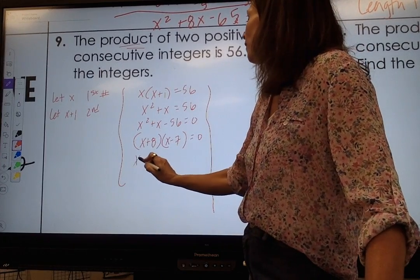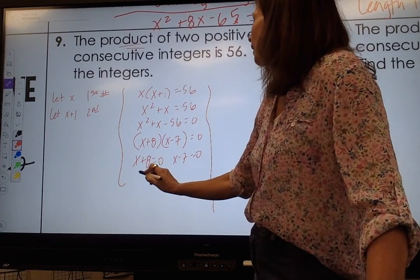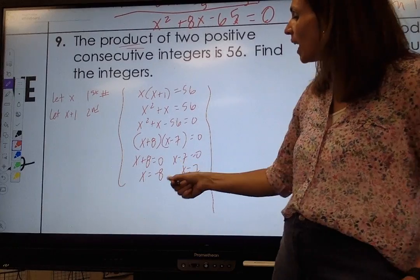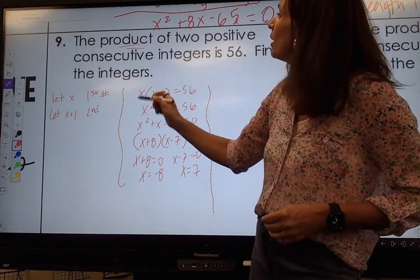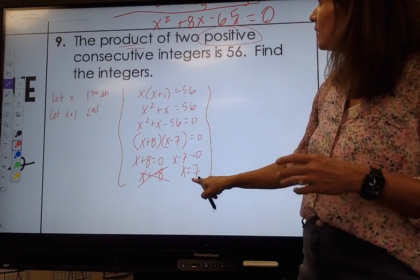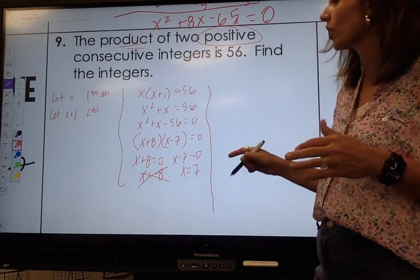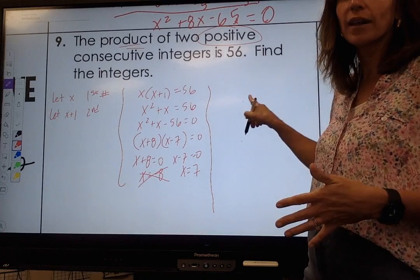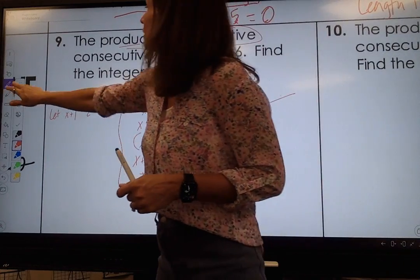Then I set my factors equal to 0 and I solve: x equals negative 8, x equals 7. This says positive integers so while negative 8 may be an answer, it's saying positive integers so I'm going to cross out negative 8. Does 7 times 8 equal 56? It does and it checks out. So in full sentence you would say two consecutive integers are 7 and 8.